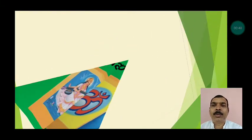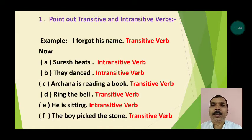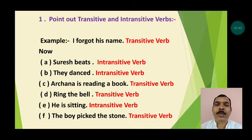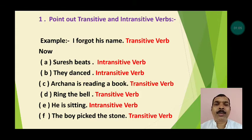Let's solve the exercise work of verbs. Point out transitive and intransitive verbs. The main verb or principal verb is divided into two parts: transitive verb and intransitive verb. The verb that requires an object is called a transitive verb, and the verb that does not require any object is called an intransitive verb.